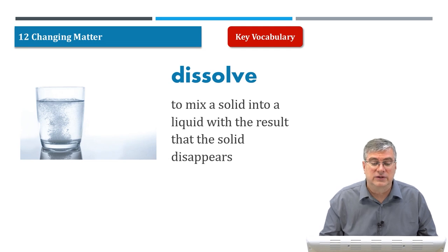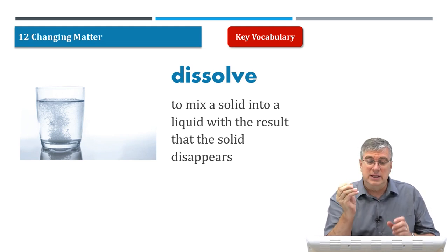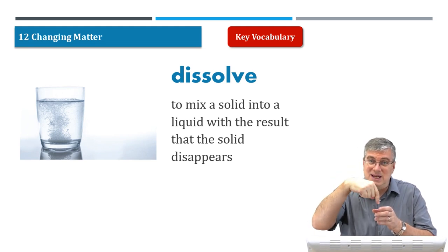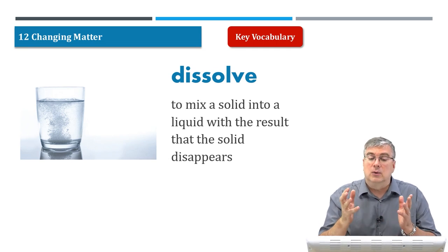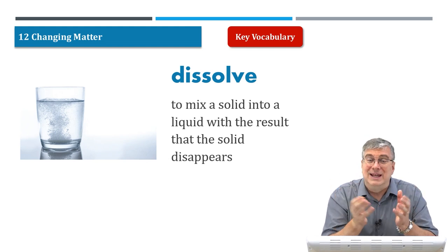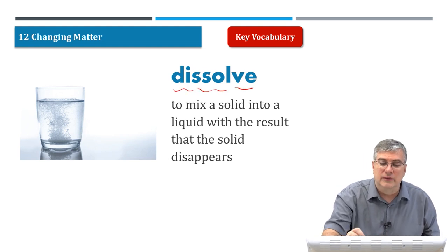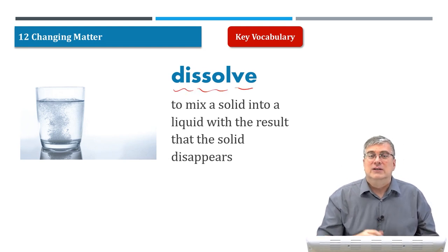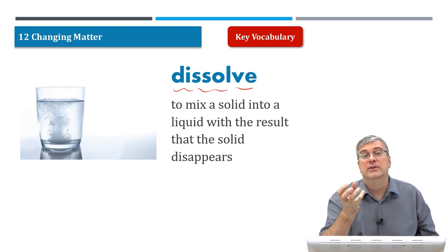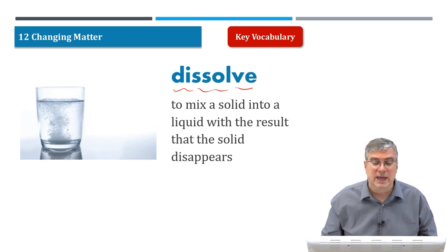Next we have dissolve — and I mentioned this already. That's when you mix a solid into a liquid. For example, the sugar is a solid. You stir it in the tea, the liquid, and the result is that the solid disappears. That sugar disappears. What happened to it? It's still there, but it dissolved into the tea. So the solid became part of the liquid. Not everything will do that, of course, but some things will.